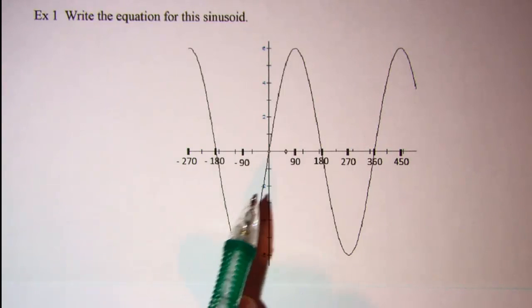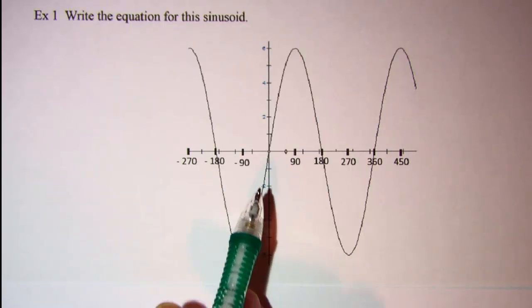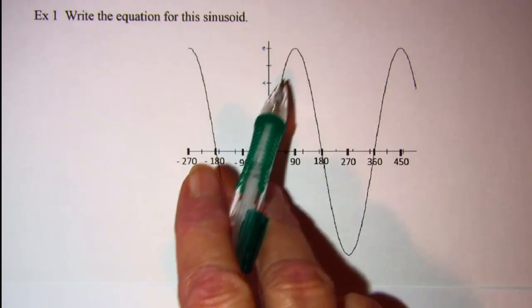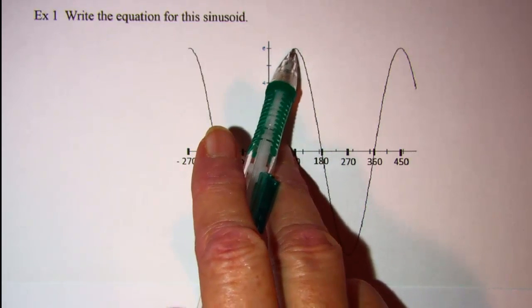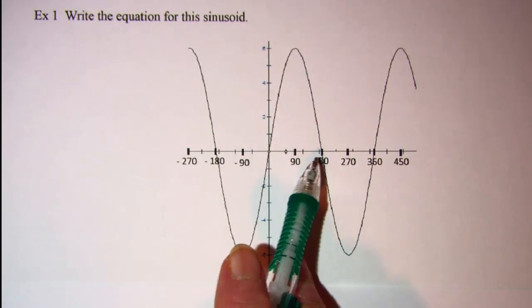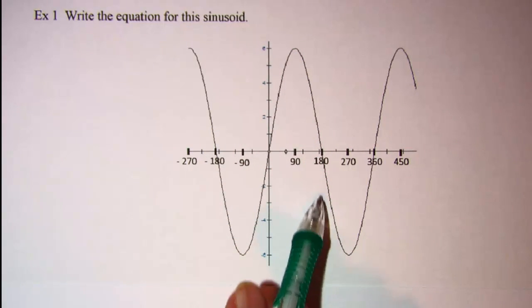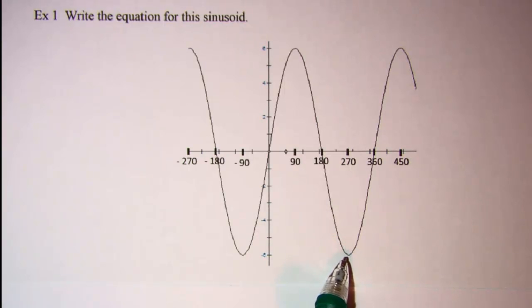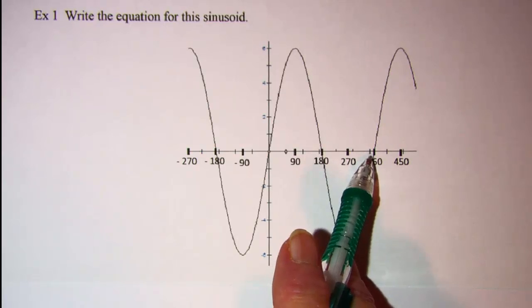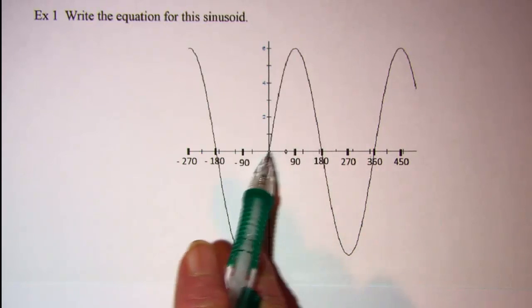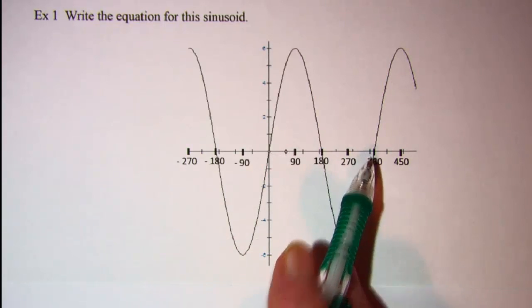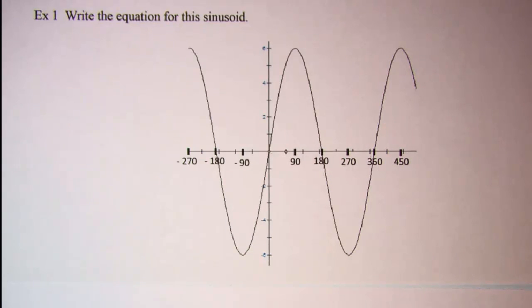Our first example we have a sinusoid that starts at the origin and heads upward and hits a maximum of 6, and then comes back down and hits the axis at 180, and then hits a minimum of negative 6 and hits the axis at 360. Now this graph, that's one period of our sinusoid, so we've not done any horizontal stretching.